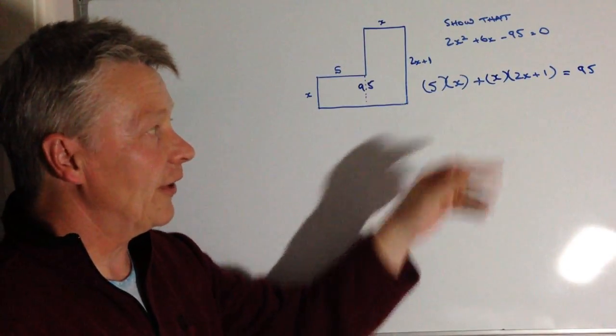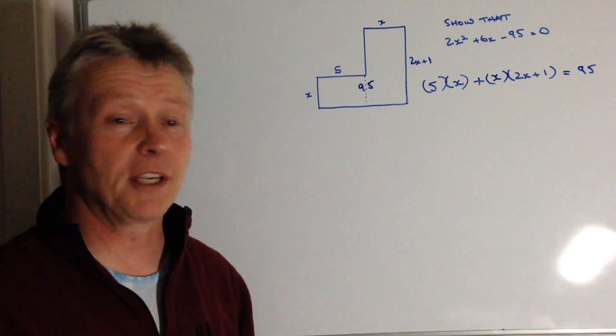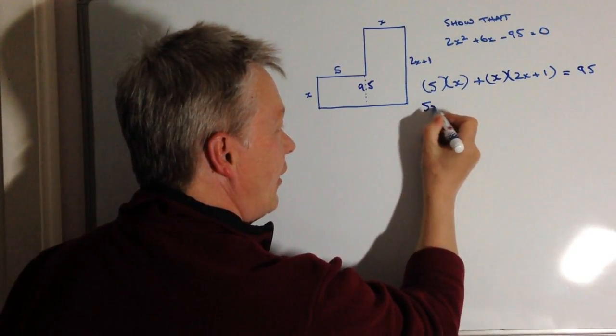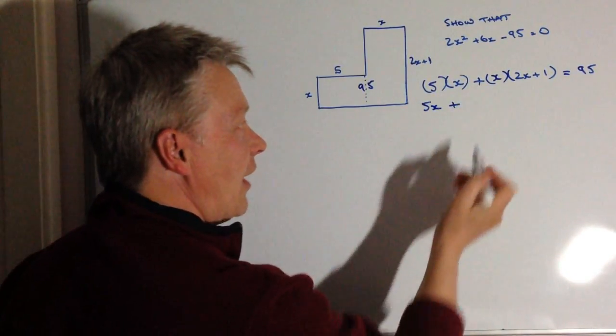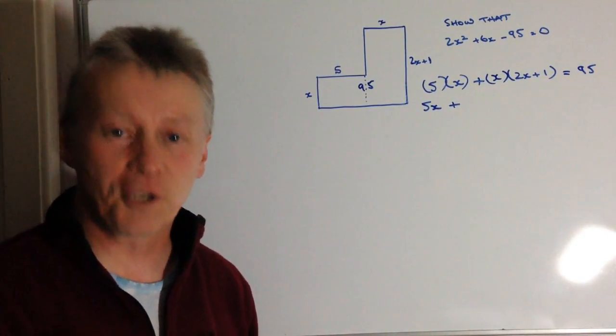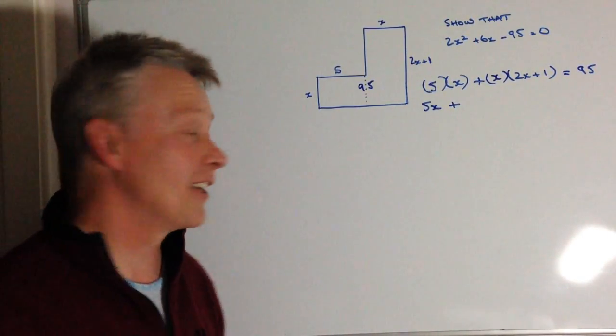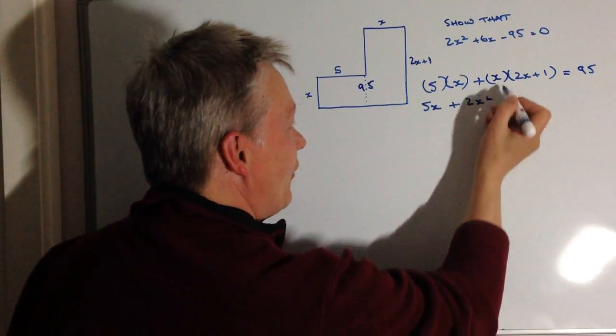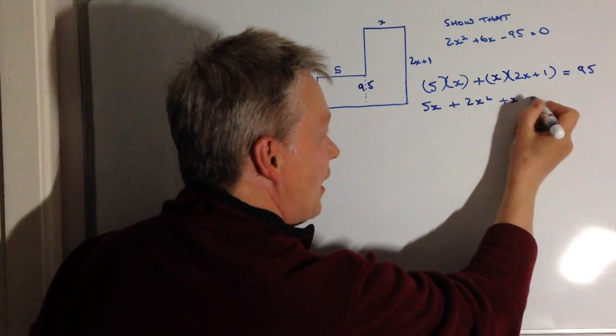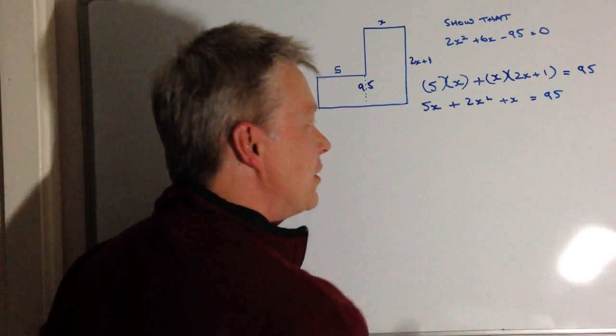So if I now start to expand those particular brackets, I've got 5 times x, which is 5x. And then I'm going to add that to x times 2x. Well, that's 2x squared. So that's 2x squared. And then x times plus 1 is going to be plus x. And all of that equals 95.